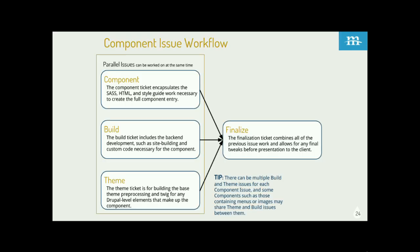A good example of this workflow is what we call component issue workflow — parallel issues going on at the same time for development and theming. We have a component ticket covering all the Sass, HTML, and style guide work — the front-end stuff that's visible to the client, ready for approvals. At the same time, a build ticket covers all the back-end work, informed by the design and front-end components. There's also theme work — all the Twig or PHP templates, all the preprocess work. These tickets arrive within the same sprint, plus a finalized ticket for review, approval, and lock-in of the actual components.